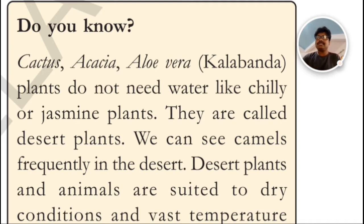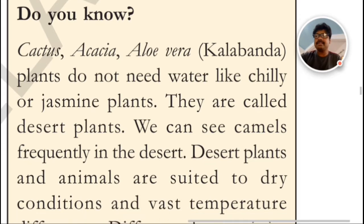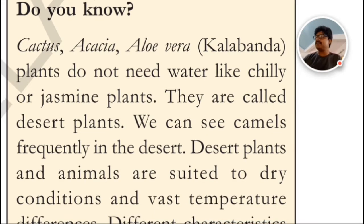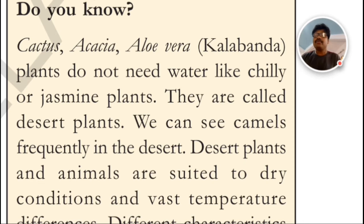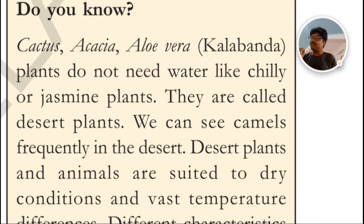In this video we have been talking about a chapter in science - that is habitat. There is a fact given in the science textbook which I will read and then explain different other concepts of this chapter. See, cactus, acacia, aloe vera - called kalabanda in Telugu - these plants do not need water like chili or jasmine plants. Why? Because they are desert plants.